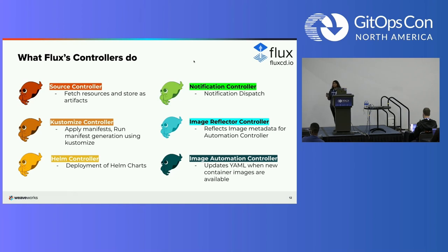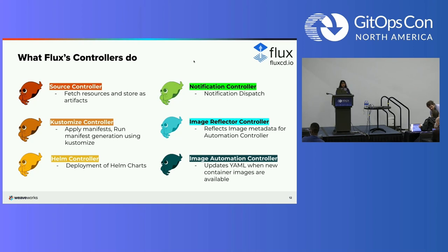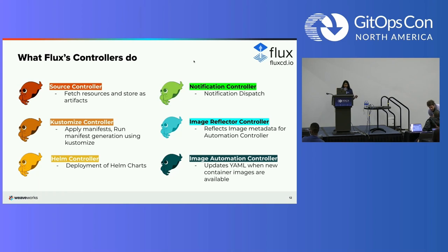If you do have a kustomization YAML already set in the folder you're pointing it to, it will just take whatever's written there and apply that. If you don't have a kustomization YAML set, it actually creates one in the background — it recursively searches for your YAMLs in that folder path, creates its own Kustomization, and runs all those manifests. Then there's the Helm controller which controls deployment of Helm charts. The notification controller specializes in handling inbound and outbound events, and the image reflector controller reflects image metadata for the automation controller, which updates YAML when new container images are available — basically they both work together to update a Git repository when new container images are available.